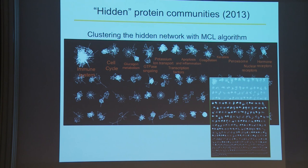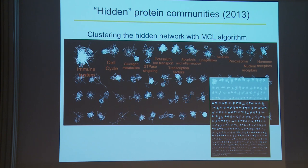You can cluster the hidden interaction network to get well-defined communities. It's surprisingly easy to label these communities. The largest is devoted to the immune system; others are devoted to cell cycle, glucagon metabolism, GTP signaling, potassium transport (important for brain function), apoptosis, coagulation, keratin, and so on. All these communities are quite natural from a biological point of view, connected indirectly by common knowledge links. This community structure is not explicitly present in protein-protein interactions themselves, so there is added value in the Wikipedia connectivity pattern for defining biological function.